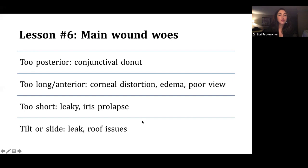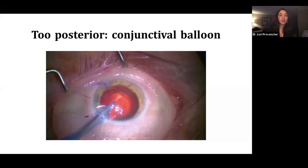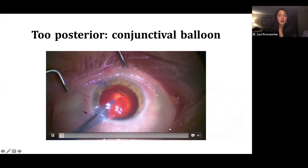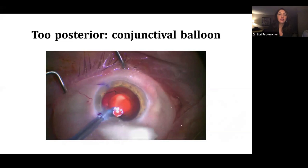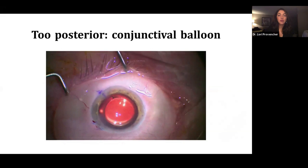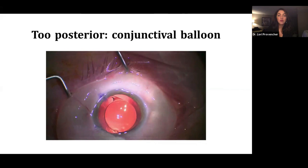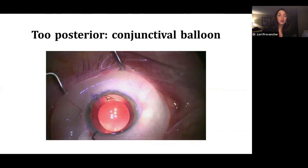If your wound is too short, you can get iris prolapse. Or if there's a tilt of your hand or a slide to the side on the way out, you can get leak or roof issues. Here you see this conjunctival donut or some call it a balloon. The BSS is building up here over the cornea, and you're getting distortion of view. So thankfully in this situation, I have a really awesome assistant that is recognizing what's happening and wicking away the BSS to improve my view. And so if this is happening during nuclear disassembly, it could be really harmful. So the solution to this is quite simple. You just do a little paracentesis at the main wound, and that way fluid is not directed subconjunctivally anymore.